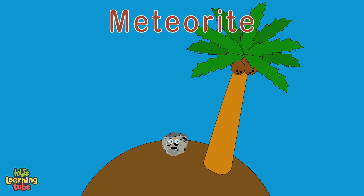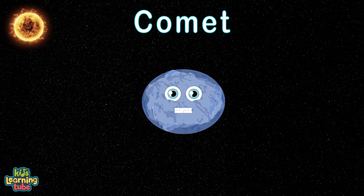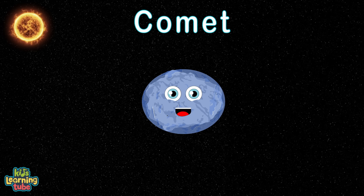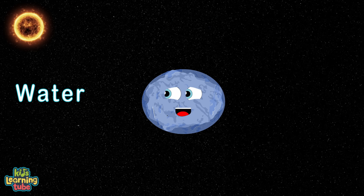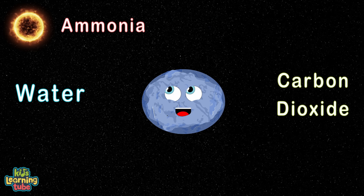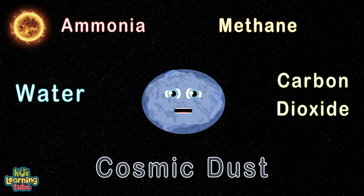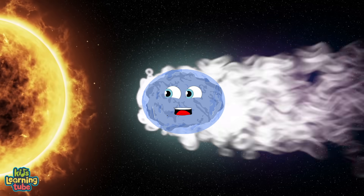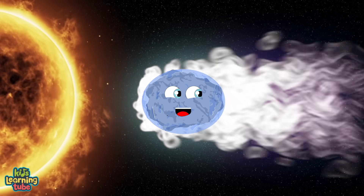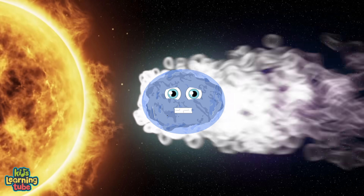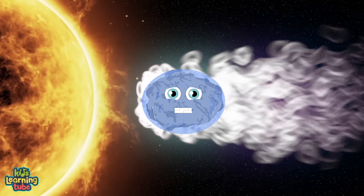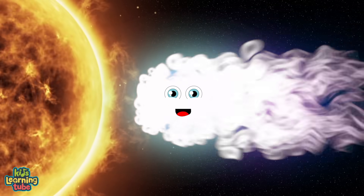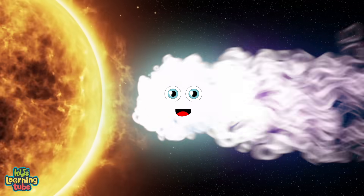I'm a comet, which is dust mixed with frozen gas. When fully frozen, I'm about the size of a small town — through space I do pass. I'm made of ices like water, carbon dioxide, ammonia, and methane mixed with cosmic dust from our solar system when it begins. When I get close to the sun, I heat up and spew dust and gas. This forms a glowing tail that stretches away from the sun as I pass.